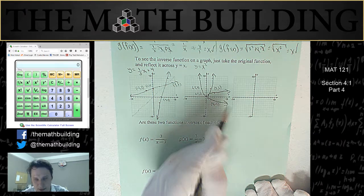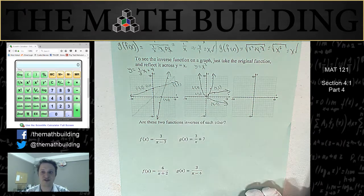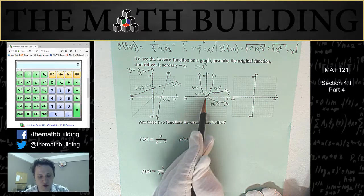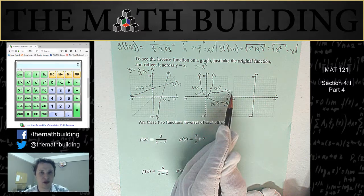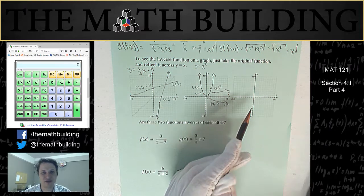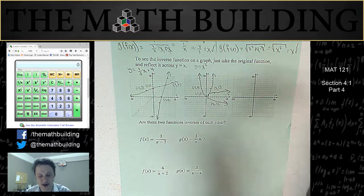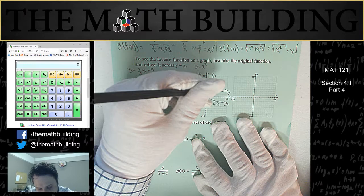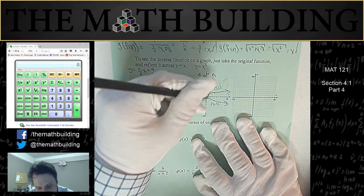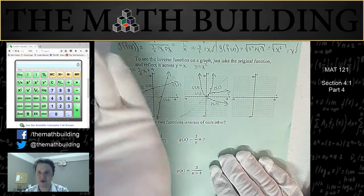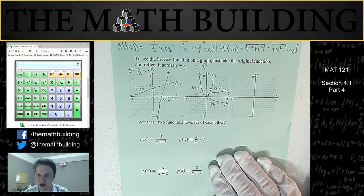If you keep going in that way, what you discover is that the graph basically turns the parabola on its side. And you notice that this top half is the square root function. That's why the square root function is the inverse of the x squared function — they kind of undo each other. Notice also that we're reflecting across the line y equals x, which turns us sideways.